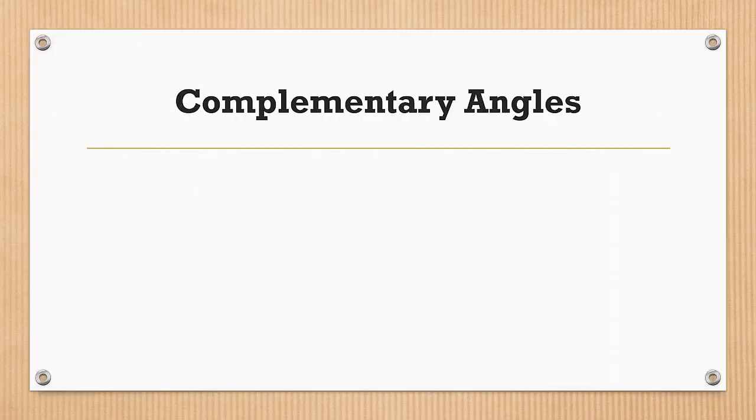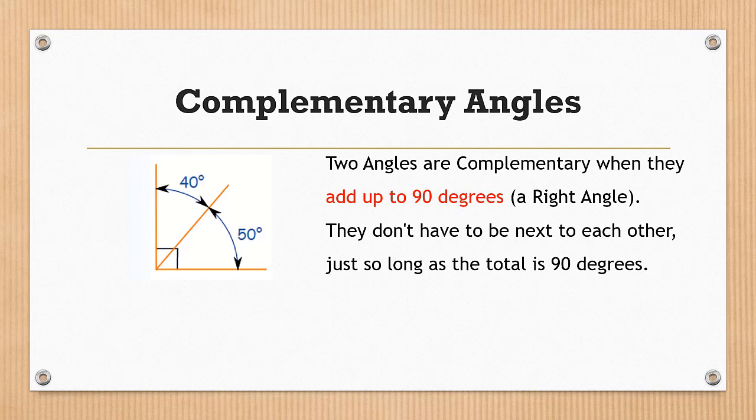What is complementary angles? Two angles are complementary when they add up to 90 degrees. They don't have to be next to each other, just so long as the total is 90 degrees.